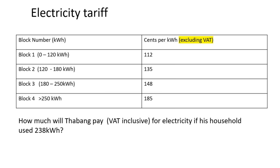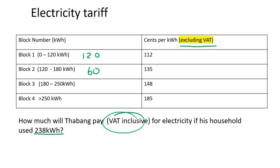This next tariff table shows prices excluding VAT, and the question asks how much Tabang will pay VAT inclusive if his household uses 238 kilowatt hours. We start at the top: 120 in block one. Then from 120 to 180 is 60. Then from 180 up to 238 — that's 238 minus 180 — gives 58. So we use 58 in the third category. Those numbers add up to 238.